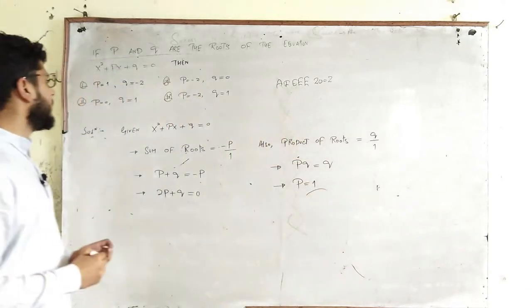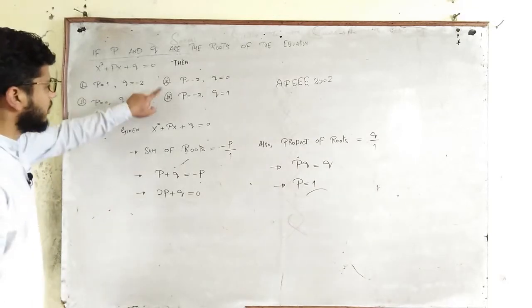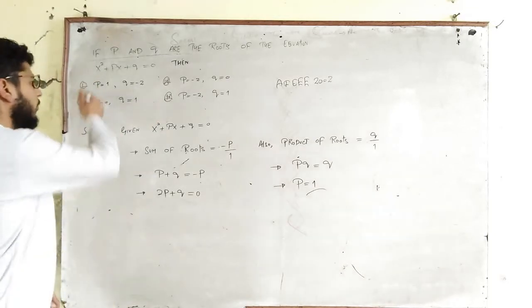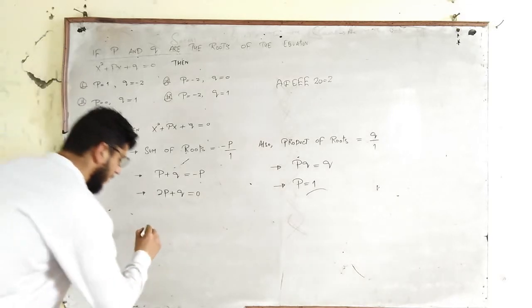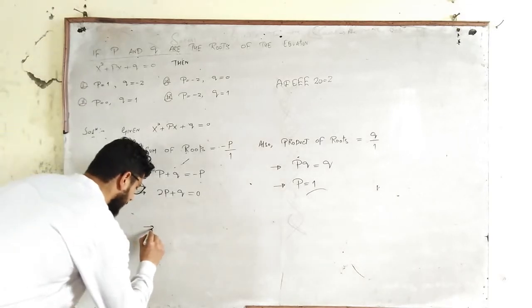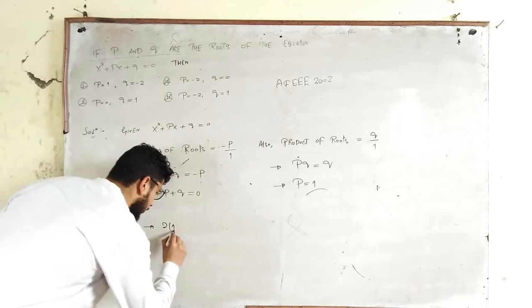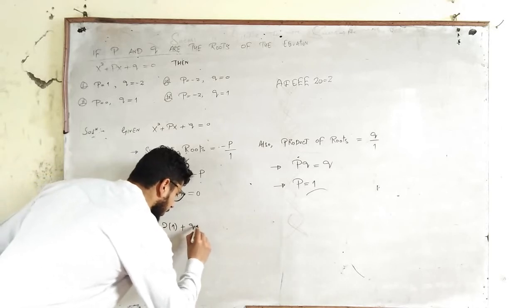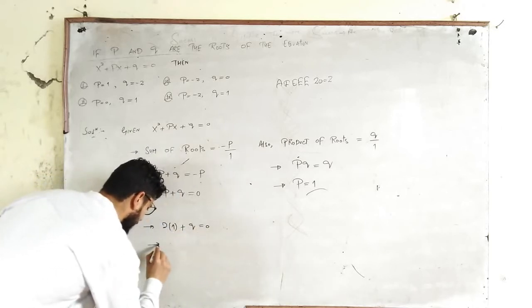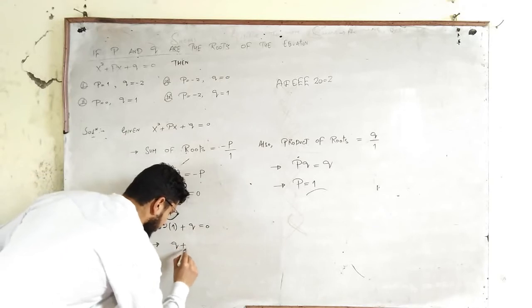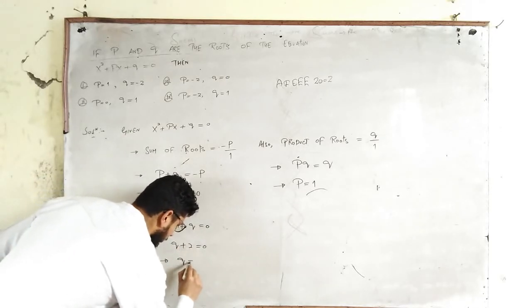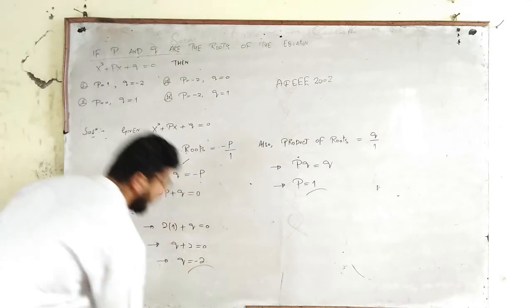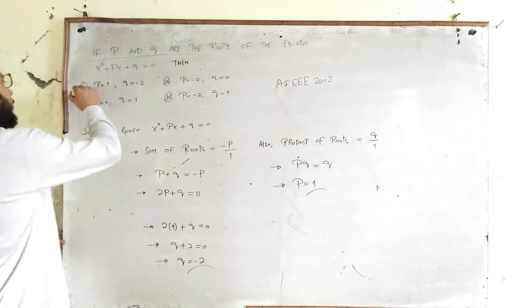P is 1. We will find the value of Q as well. Now if we substitute P = 1 here, it is 2(1) + Q = 0, that implies Q + 2 = 0, which implies Q = -2. So P = 1, Q = -2, so option number first is correct.